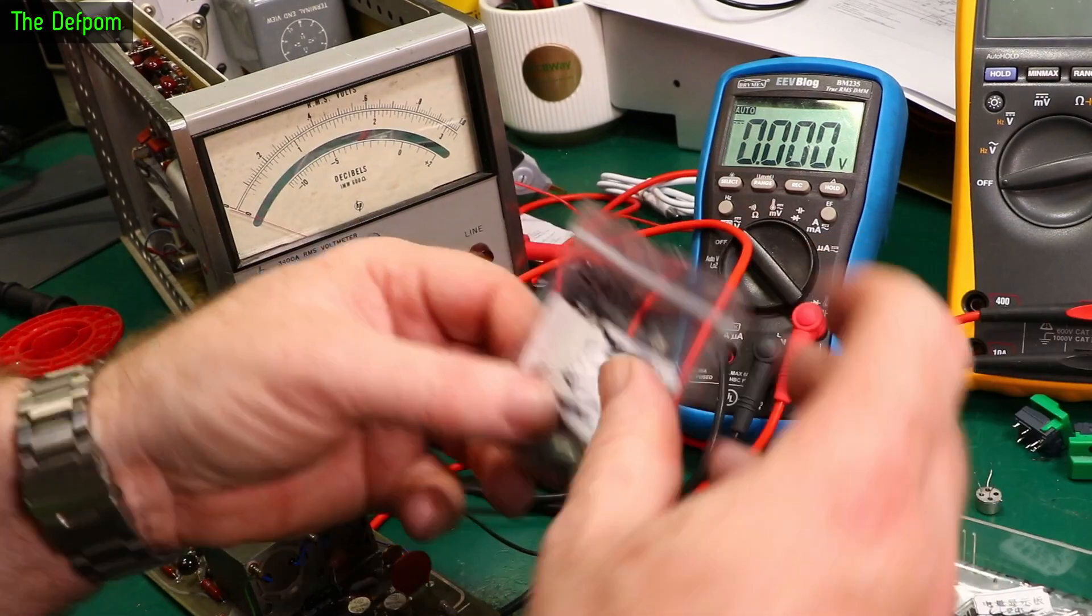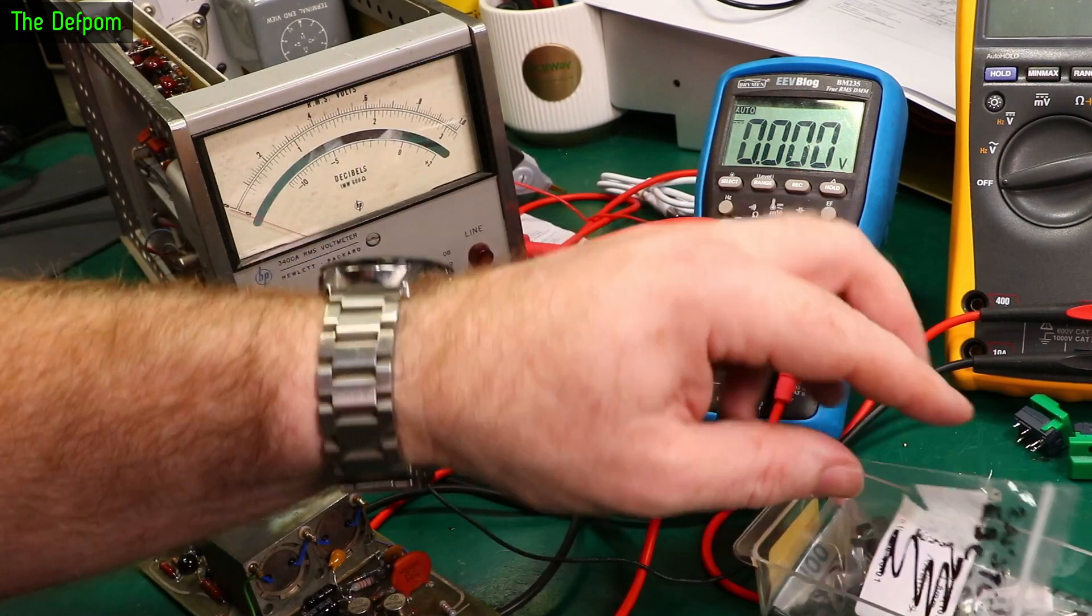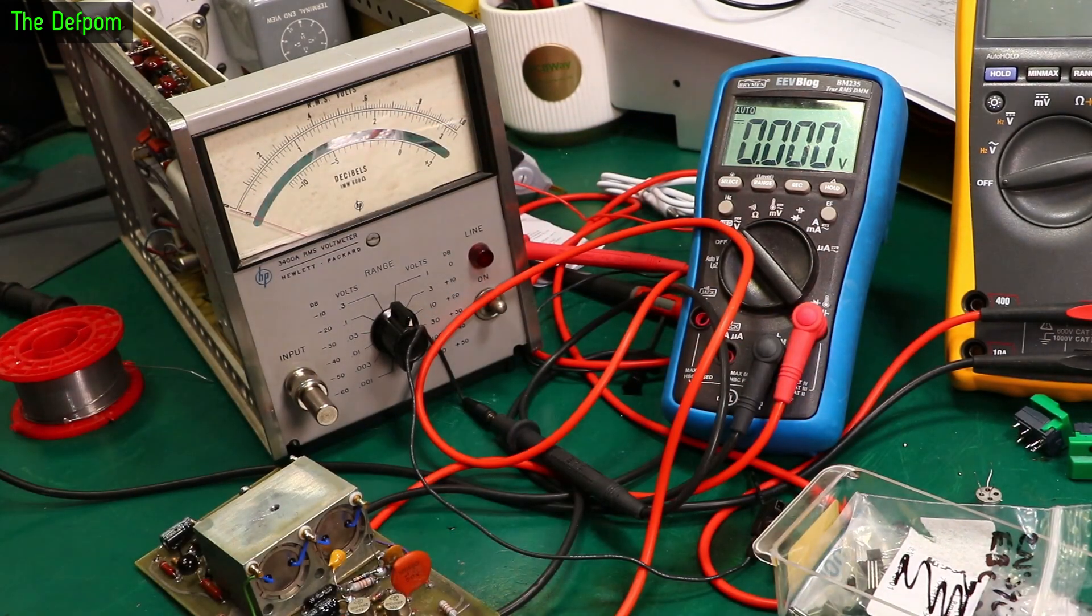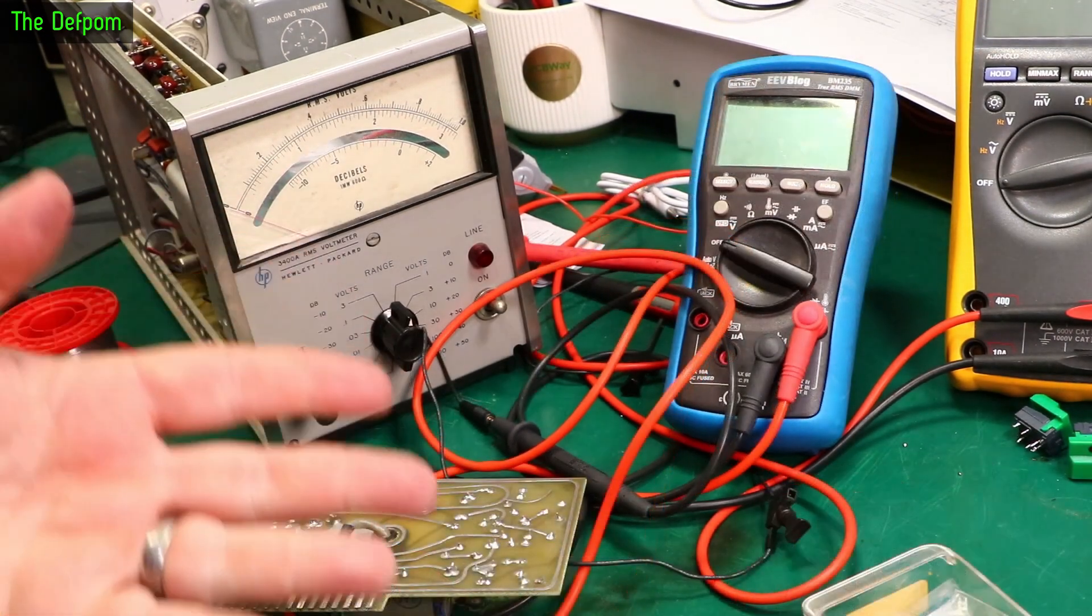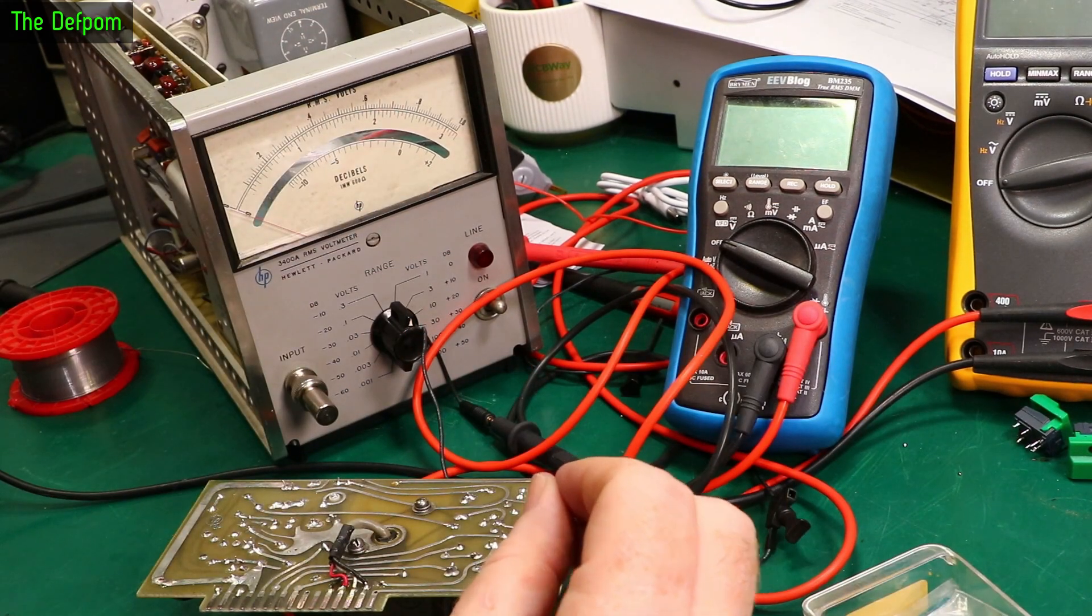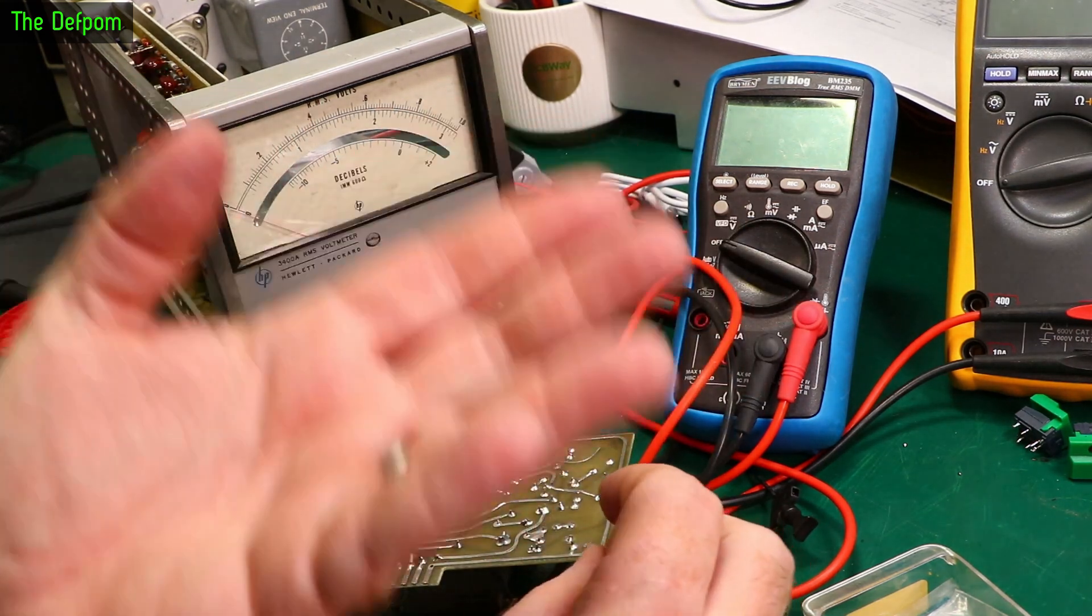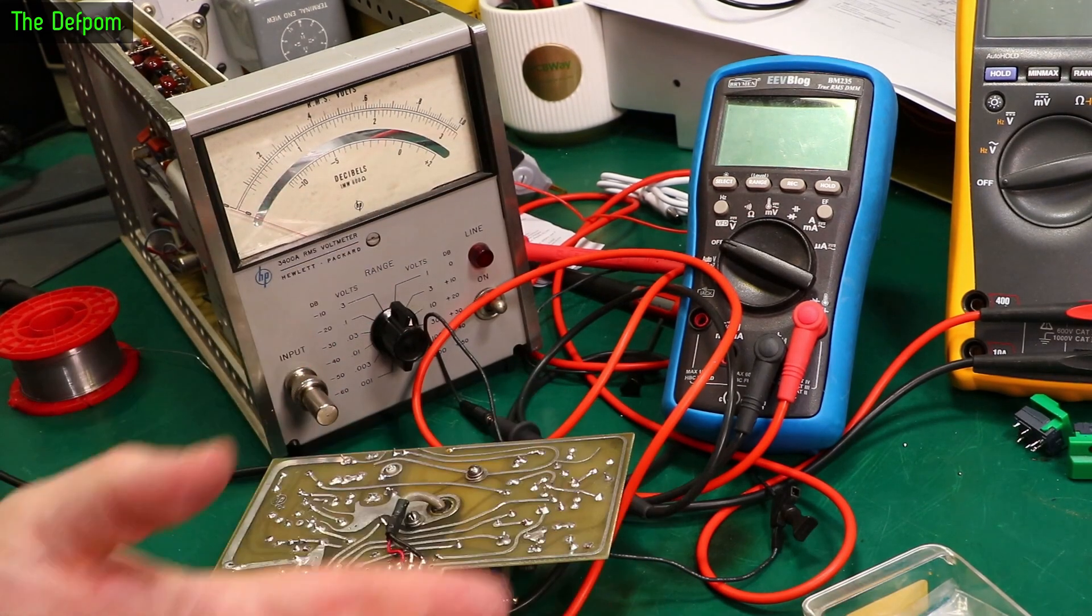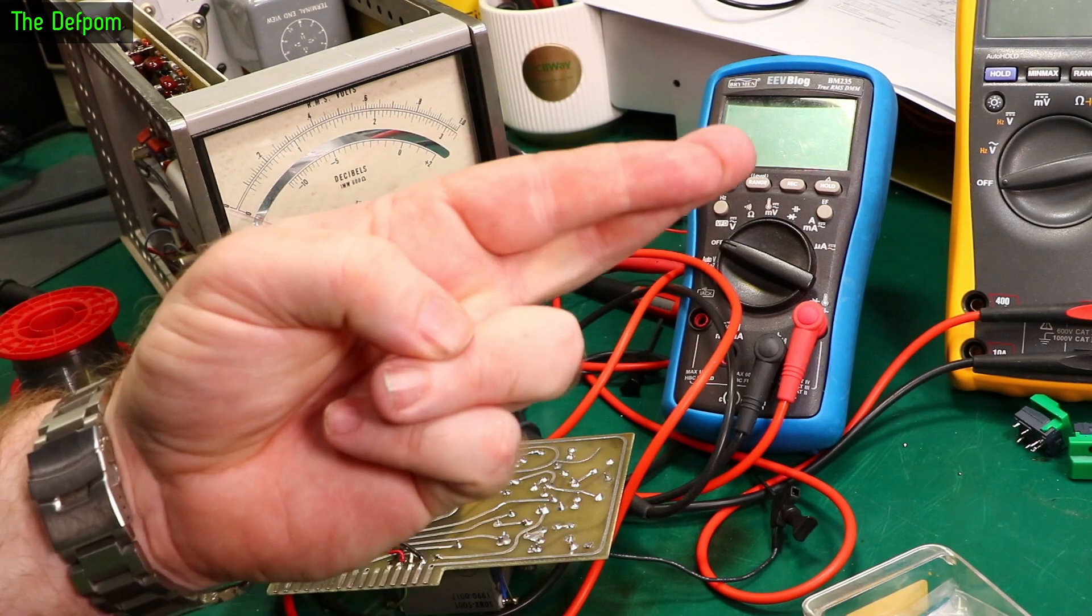So one thing to take from that is that it does appear that we can actually replace these germaniums with silicons. At least to not make the fault any worse. It may be that you can actually just put these in and it will work just fine as they are. That's a nice thing to know. So watch out for the next part where I build the new board and test it. Make sure you subscribe if you're not already subscribed. Hit the bell icon and get notifications. There'll be another part where I make the new board and install it and see if it works. I hope so.